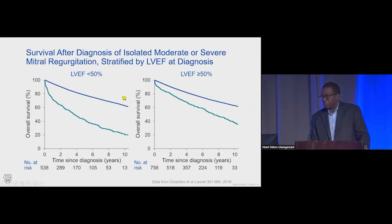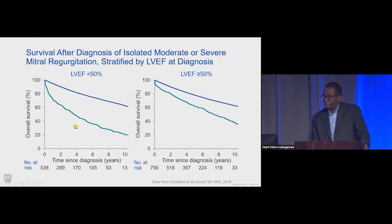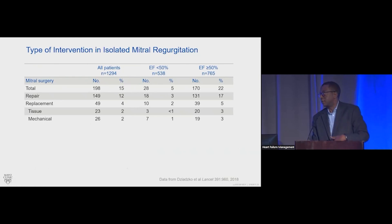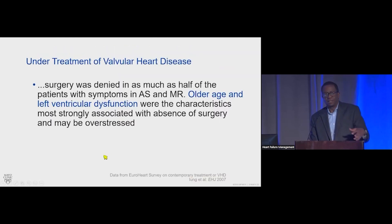There's gross under-treatment of valvular heart disease. Data from Olmsted County looking at survival after diagnosis for isolated moderate or severe mitral valve regurgitation, stratified by low or normal ejection fraction, shows really terrible survivorship whether you have preserved or reduced LVEF. When we looked at the percent of patients that had some kind of repair or replacement, it was only 15% of the cohort — and this is at Olmsted County where the Mayo Clinic is, with access to all percutaneous and surgical options.